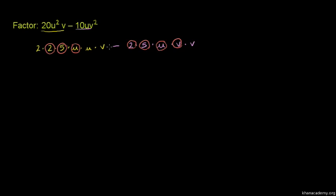And v appears in both. We're only concerned with the common factors. The common factor is 2 times 5 times u times v.